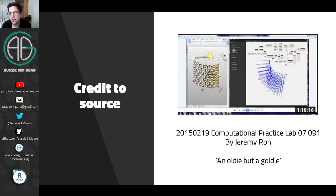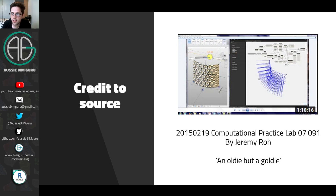I'd like to give credit to the source for this base workflow by Jeremy Rowe, where I originally learned about adaptive components. In this case we're going to be using a slightly different approach — he used the Dynamo system in Revit, whereas I'm going to be using Rhino Inside to access the Ladybug package, specifically to access the sun vectors which are no longer accessible in later versions of Revit.